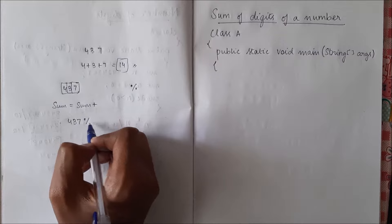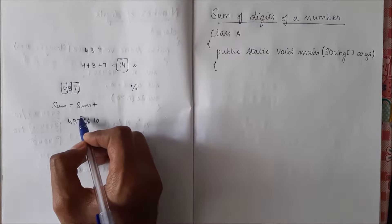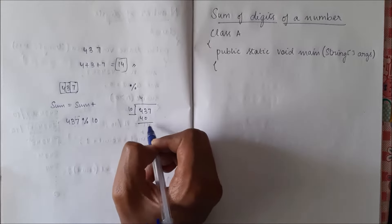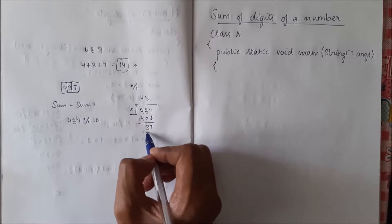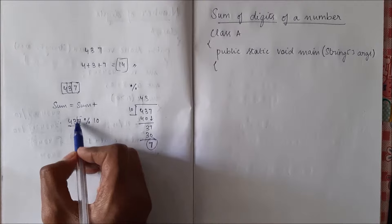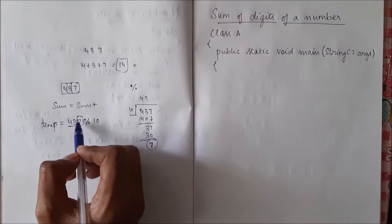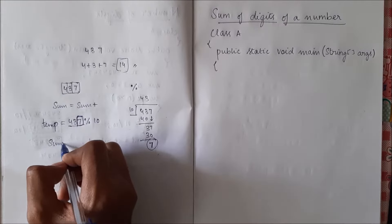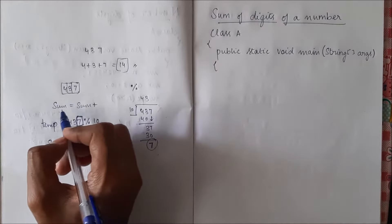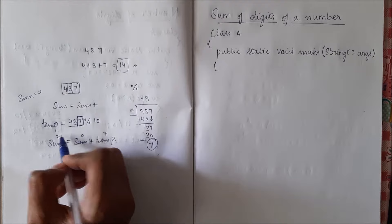When I do 437 mod 10, it will give us a remainder — that remainder is 7. If you try to divide and see, there will be 43 times 10 is 430, and 7 is the remainder. So when we do the number mod 10, we will be getting the last digit. This last digit we will store in some variable say temp. Now temp will have the last digit, so we put it in sum. Initially sum will be 0, so 0 plus 7, sum will become 7.